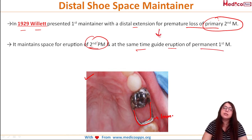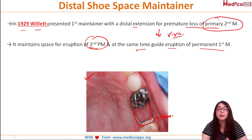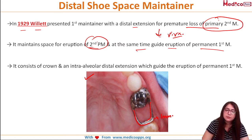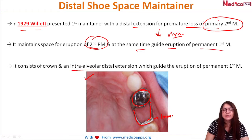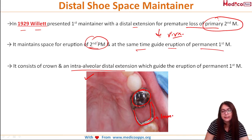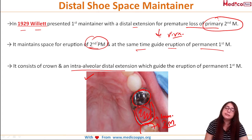These are very basic points examined in Viva and MCQs. The distal shoe space maintainer consists of a crown and an intra-alveolar distal extension which guides the eruption of the permanent first molar. This extension guides the first molar while at the same time maintaining the space for the second premolar.